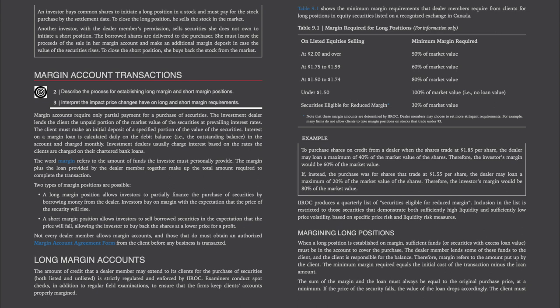Here's an example. To purchase shares on credit from a dealer when the shares trade at $1.85 per share, the dealer may loan a maximum of 40% of the market value, so the investor's margin would be 60%. If instead the purchase was for shares that trade at $1.55 per share, the dealer may loan a maximum of 20% of the market value, so the investor's margin would be 80%. IIROC produces a quarterly list of securities eligible for reduced margin, restricted to those securities that demonstrate sufficiently high liquidity and sufficiently low price volatility, based on specific price risk and liquidity risk measures.